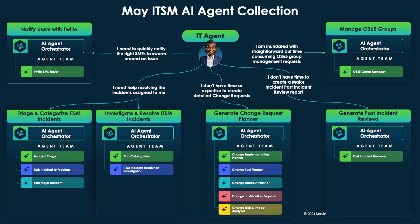From sending an ad hoc notification with Twilio, to fulfilling the request to add or remove users to Office 365 groups, we also handle the full gamut of an incident lifecycle. When an incident is created, a triage and categorize ITSM agent can look for major incidents or PRBs and set the proper category and subcategory. At the same time, an investigation and resolution AI agent can find catalog items, similar incidents, and knowledge articles to come up with a resolution plan for that given issue.